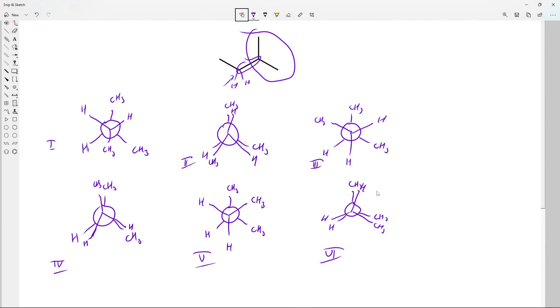So I have three that are eclipsed: Roman numeral 2, 4, and 6. Those are all terrible. We've got eclipsing interactions all over the place. We don't really care about an H and an H, that's relatively tiny. But everything else here, these are serious problems. Those conformations are very unlikely to be stable in solution.